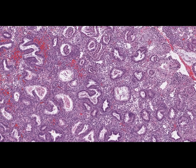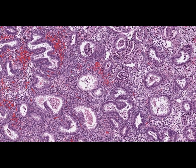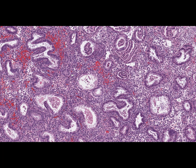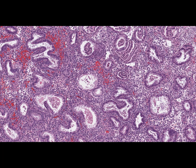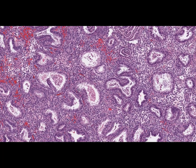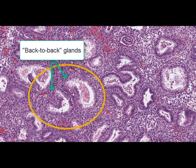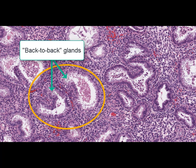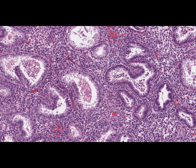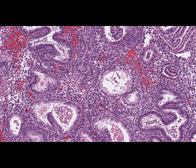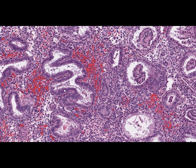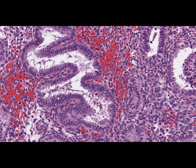At high magnification, we can observe typical glandular formations of the endometrium with several peculiarities in their structure and location relative to each other. Firstly, some glands have a twisted appearance and are called corkscrew-shaped glands. Due to the increased number of glands, some are allocated too close to each other — such glands are known as back-to-back glands. Epithelial proliferation in some glands shows the appearance of pseudostratified epithelium, where epithelial cells seem to be located in a few layers.